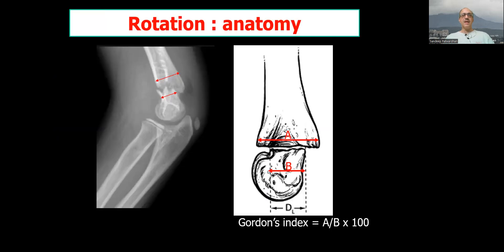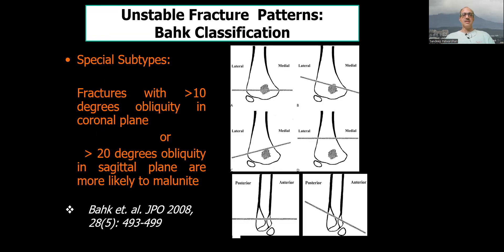You can make out the difference by looking at the width of the distal shaft of the humerus. Compare it with the width of the distal fragment. That is called Gordon's index, and if it is high that tells you that there is rotational instability.